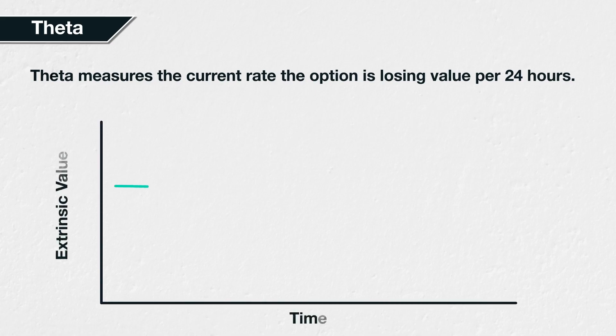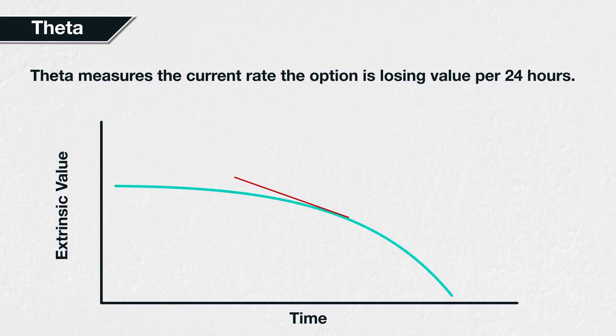If this chart represents the extrinsic value of an option over time, at any point in time we could take a tangent from this curve, and theta would describe the angle or steepness of this line — in other words, how quickly the extrinsic value is moving down in that moment. The steeper this tangent, the higher the theta is, and the faster the option is losing extrinsic value.